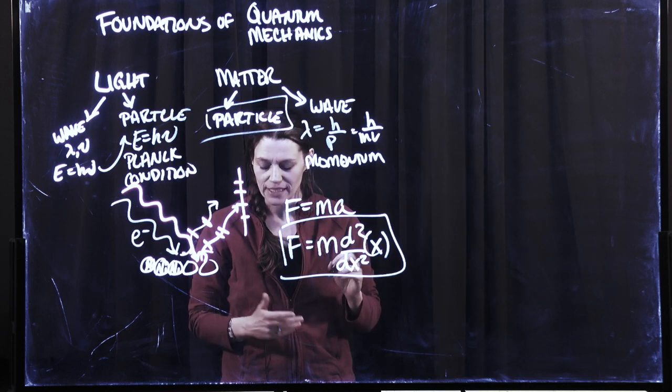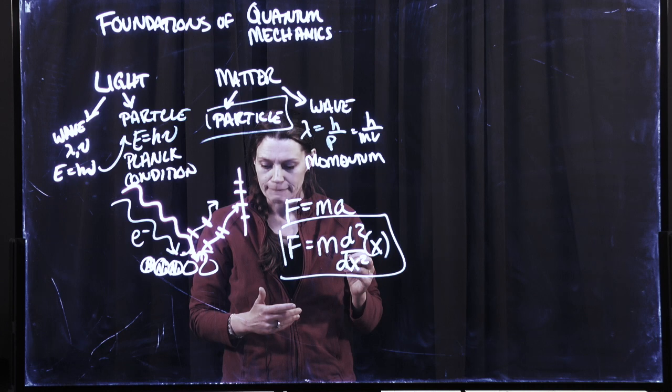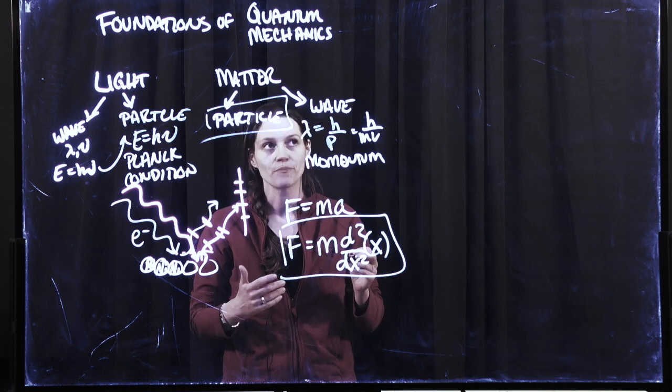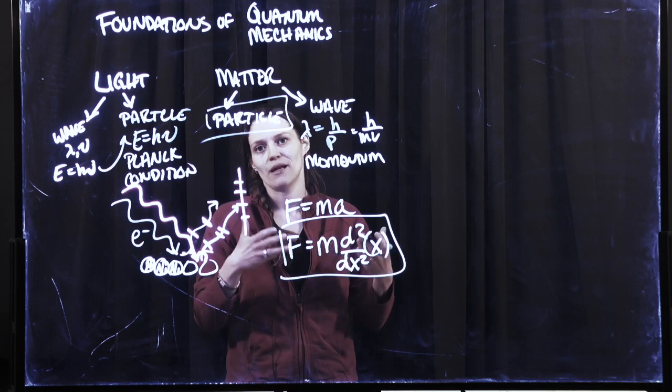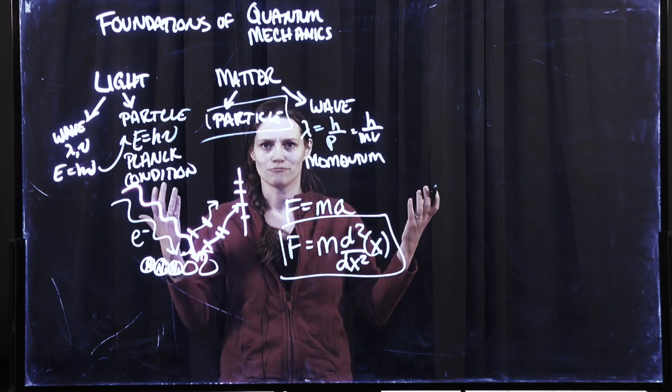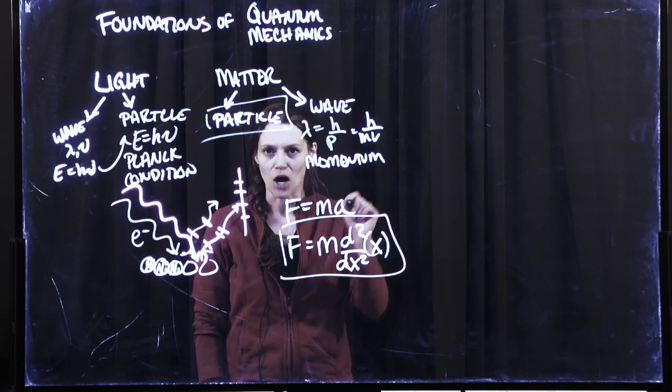And so this is where we kind of develop this idea that, well, we need to start somewhere. And so the goal is that we need an equation to represent how electrons move.